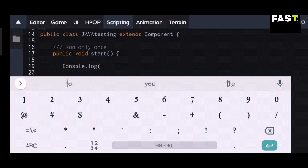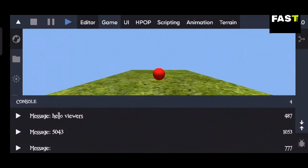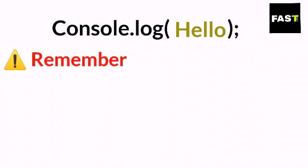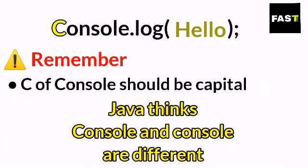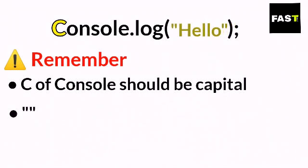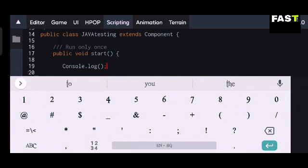Now let's test the methods using a simple keyword: Console.log() with a semicolon. Console.log is used to show a message in the console. By using this keyword we can show a message and check that our script is working. Remember that whenever you use this keyword, the C of Console should be capital, because Java is a case-sensitive language — Java treats 'console' and 'Console' as different. Your message should be between quotation marks, and always put a semicolon after the closing bracket.